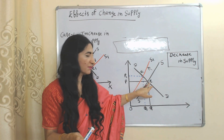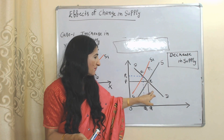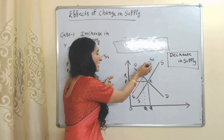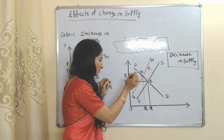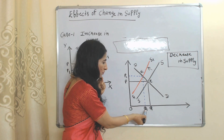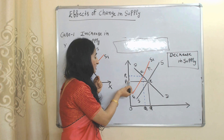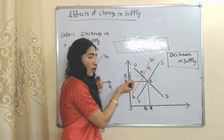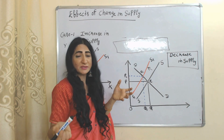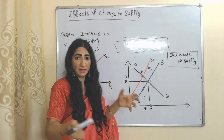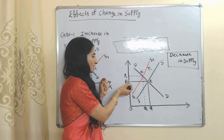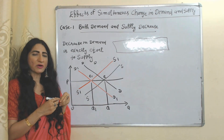Second case: decrease in supply. Our initial equilibrium point is E. Now suppose demand is constant. Due to reducing supply, the supply curve shifts backward. S1S1 is the new supply curve. E1 is the new equilibrium point. At this equilibrium point, our quantity is reduced from Q to Q1 due to reducing supply. But prices have increased from P to P1. Why? Because demand is constant but suddenly supply has reduced — producers don't have so much remaining stock to sell. That's why prices have increased.